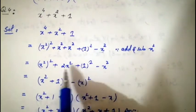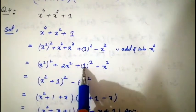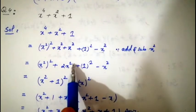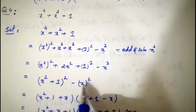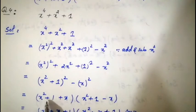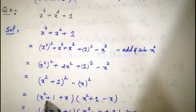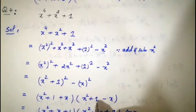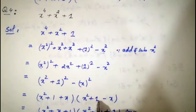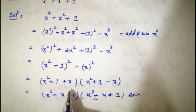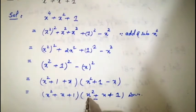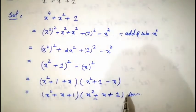Here a = x² and b = 1, so 2ab = 2·x²·1 = 2x². The formula a² + b² + 2ab is complete: we get (x² + 1)² − x². Applying a² − b² = (a + b)(a − b) with a = x² + 1 and b = x: we get (x² + 1 + x)(x² + 1 − x), i.e., (x² + x + 1)(x² − x + 1). That is the answer to question four.